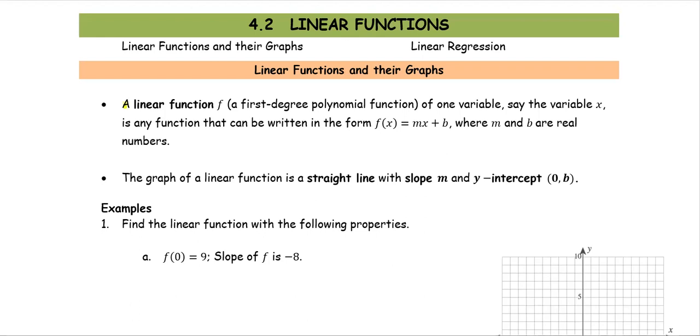A linear function f, or a first-degree polynomial function of one variable, say the variable x, is any function that can be written in the form f(x) = mx + b, where m and b are real numbers, and the graph of the linear function is a straight line with slope m and y-intercept (0, b).